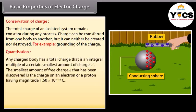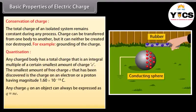Quantization: Any charged body has a total charge that is an integral multiple of a certain smallest amount of charge e. The smallest amount of free charge e that has been discovered is the charge on an electron or a proton, having magnitude 1.60 × 10⁻¹⁹ coulomb. Any charge q on an object can always be expressed as q = ne, where n is an integer.